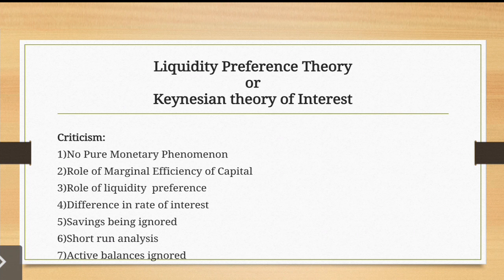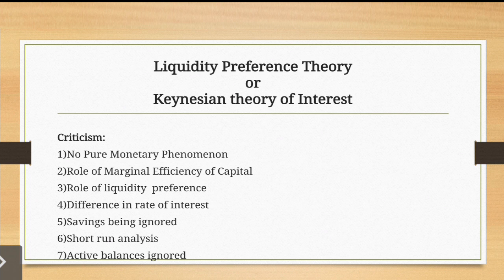The third criticism is about the role of liquidity preference: liquidity preference is not the only factor governing the rate of interest in the market. There are several other factors — like economic conditions and law and order situations of the country — that also affect the demand and supply of money. The fourth criticism is about differences in the rate of interest: this theory ignores the possibility of differences in the rate of interest in the market at the same time, whereas in reality the rate of interest does not remain uniform.